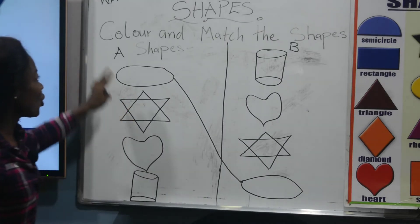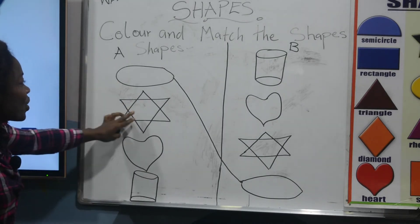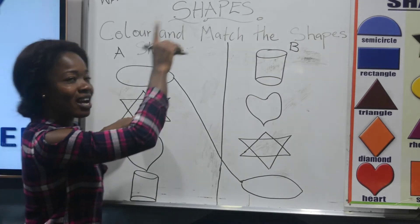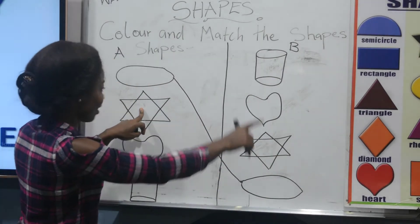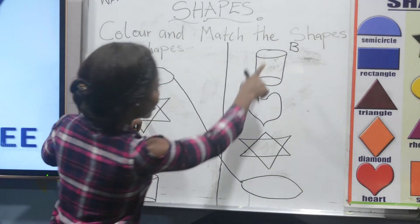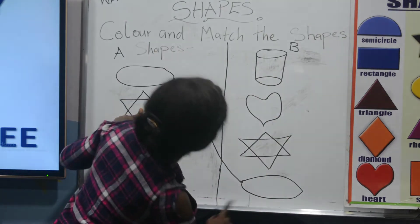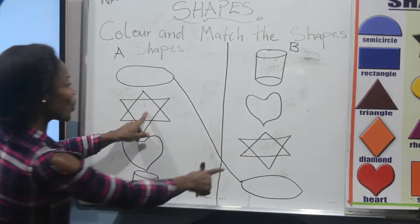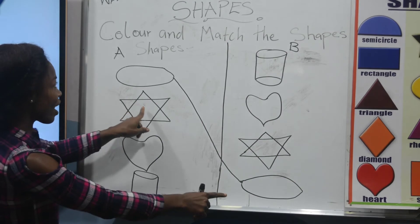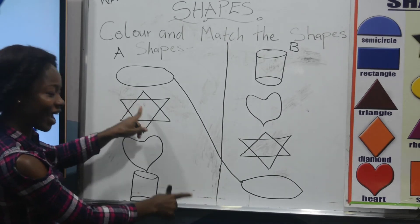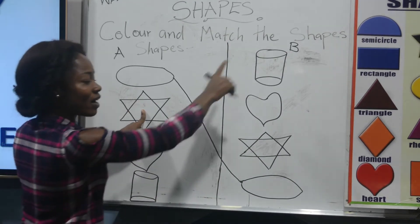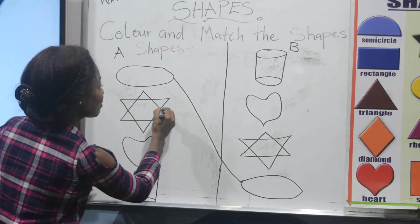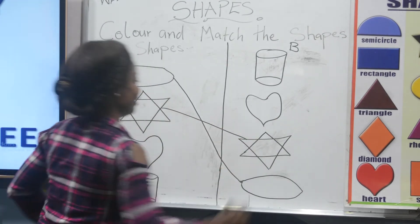Now in Group A we have star, so we are going to look for another star in Group B. Where is it? Here! Good. We have star in Group A and another star in Group B, so we are going to match it.